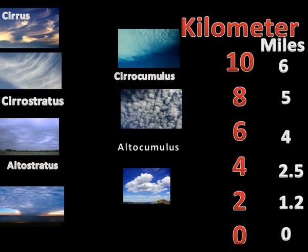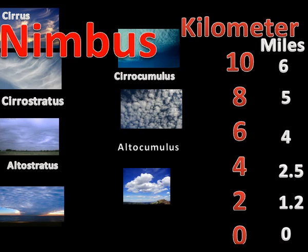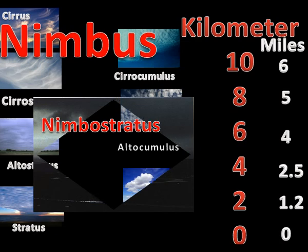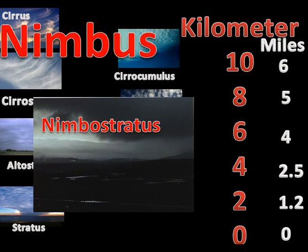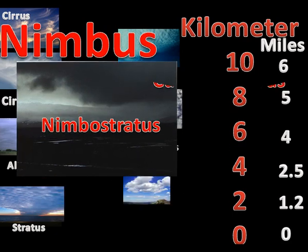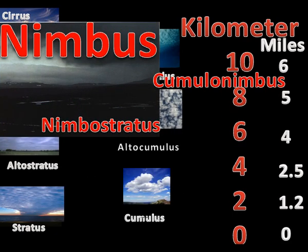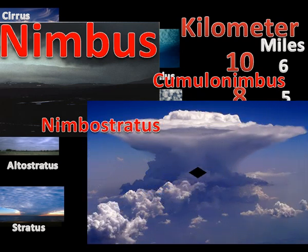The last word needed to name and understand basic cloud formations is nimbus. Nimbus clouds mean rain clouds. Therefore, a nimbostratus cloud is a stratus cloud built up into a rain cloud. A cumulonimbus cloud is a cumulus cloud that builds up in a spectacular fashion and can produce rain, lightning, hail, high winds, and sometimes dangerous tornadoes.